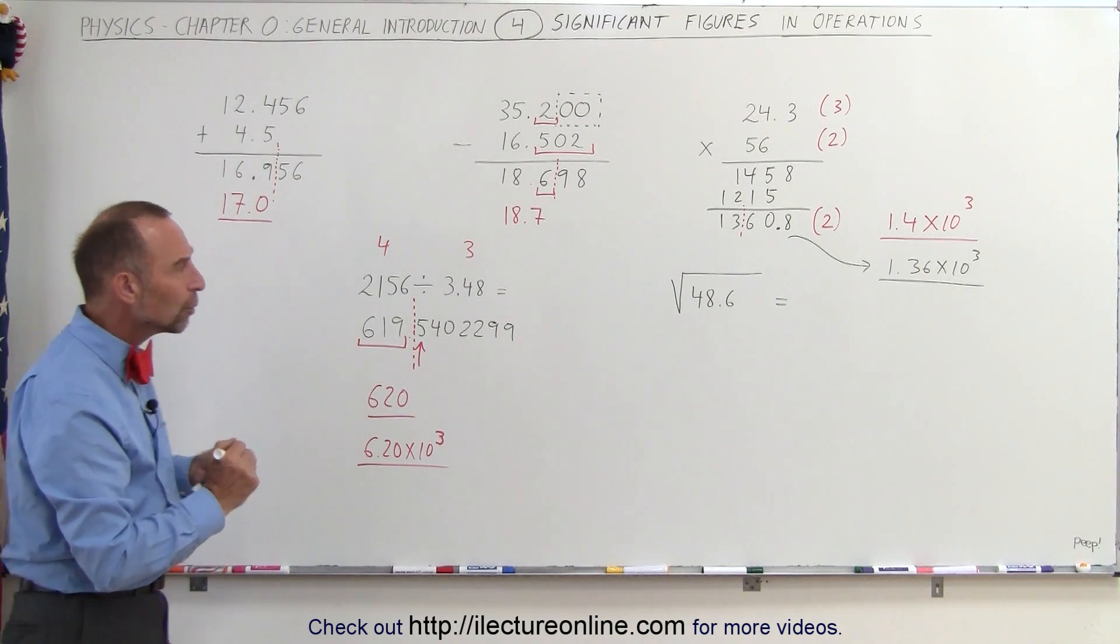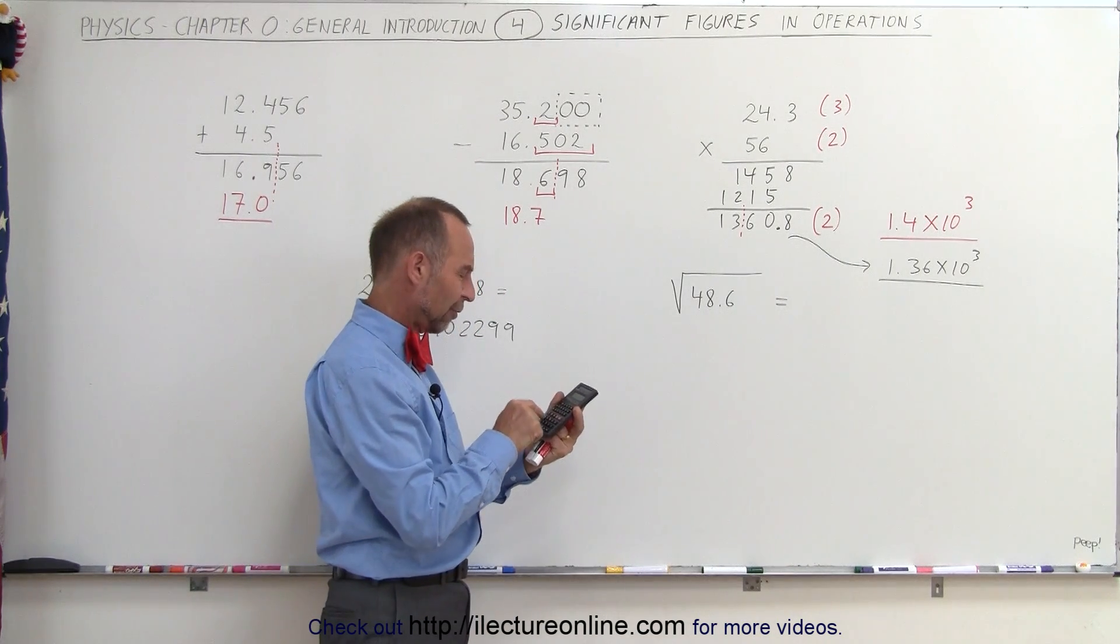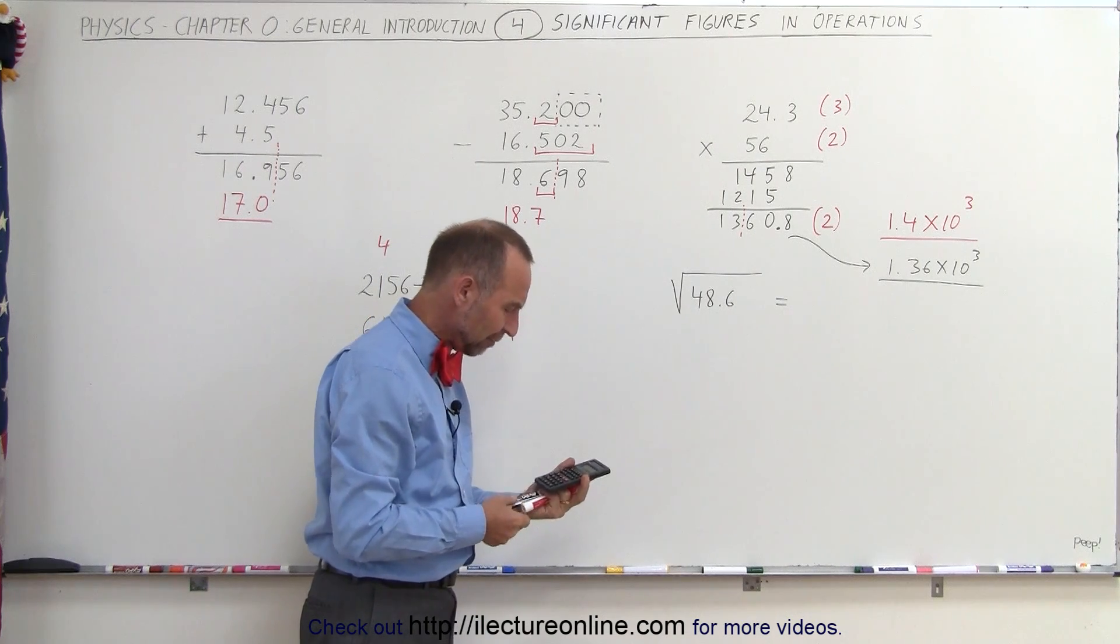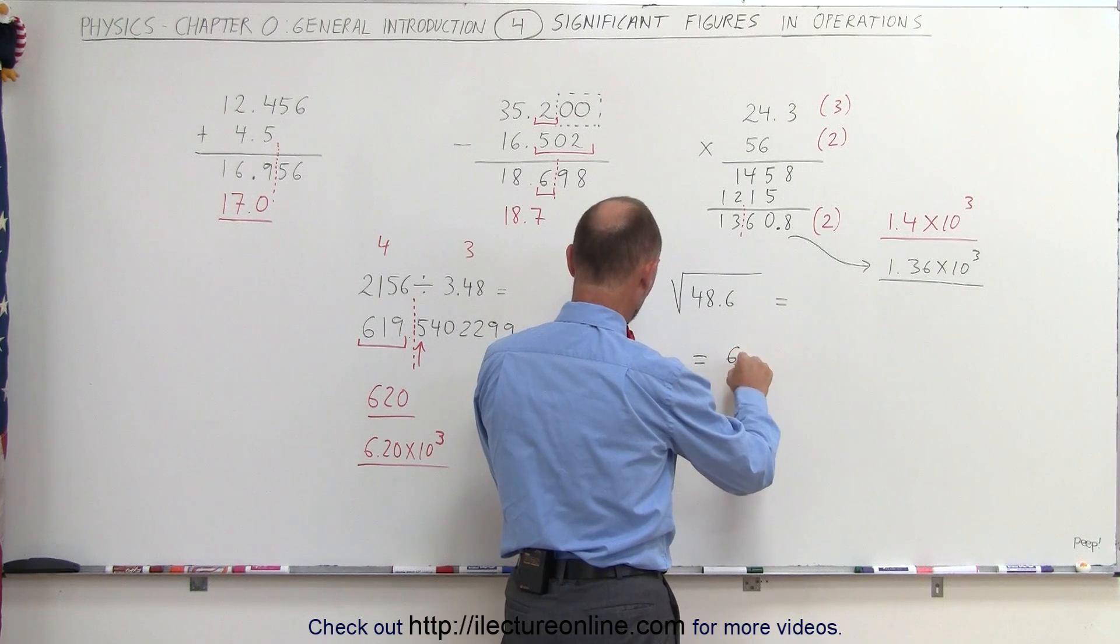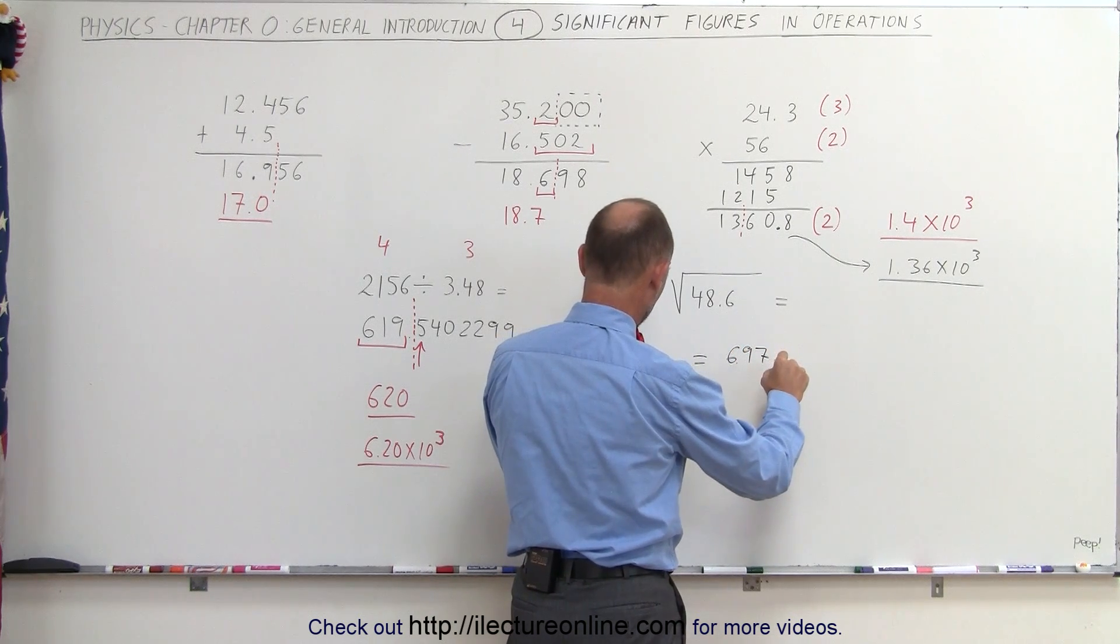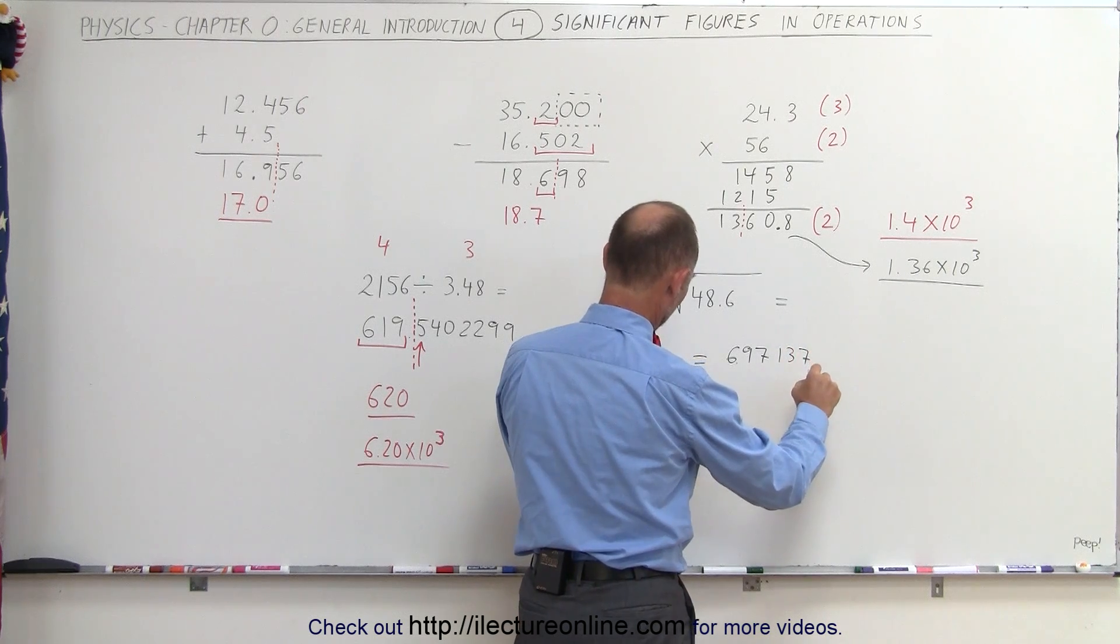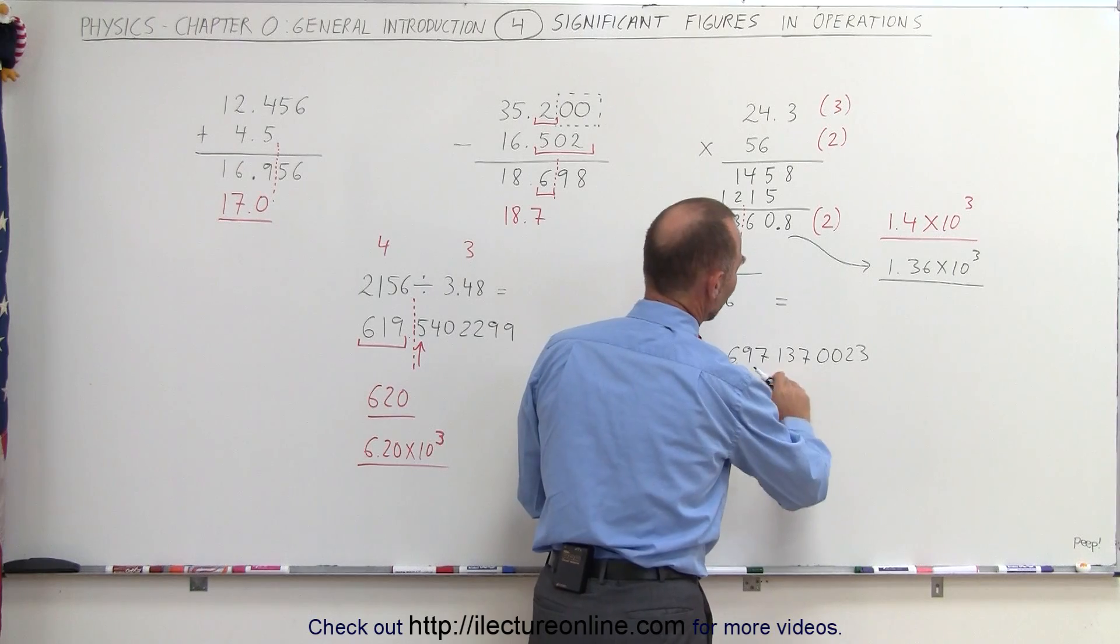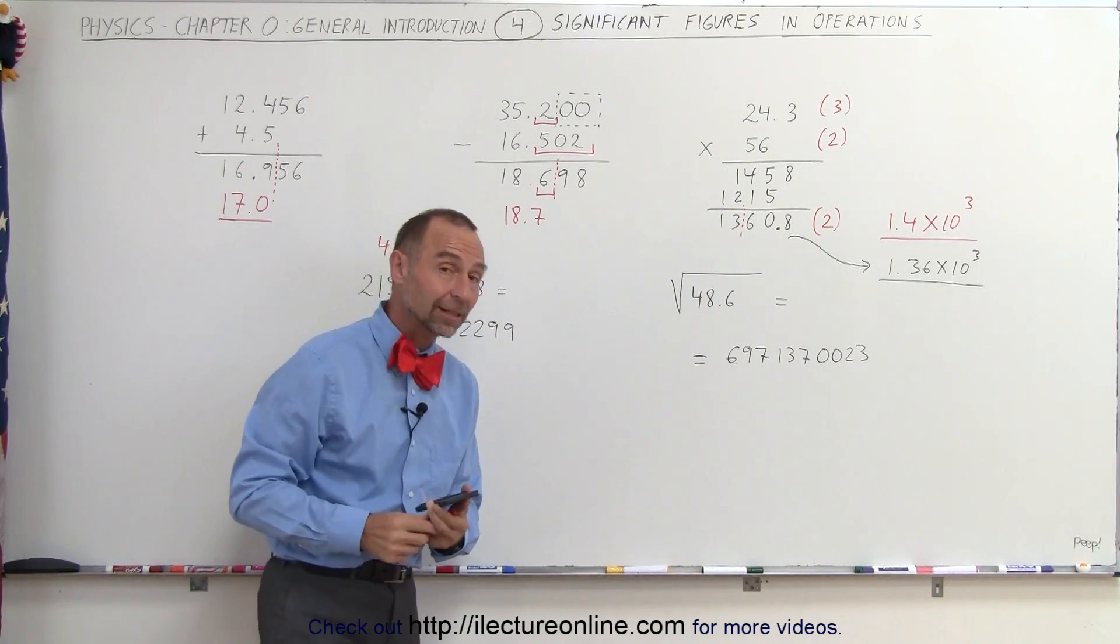And finally, let's take the square root of 48.6. Again, I'll use my calculator. So we have 48.6. Take the square root of that. My calculator will give you the following number. So this would be equal to 6.97137.0023. Again, of course, these numbers are by no means significant. They don't mean anything at all. Just because your calculator spits them out doesn't mean that those have any particular meaning.